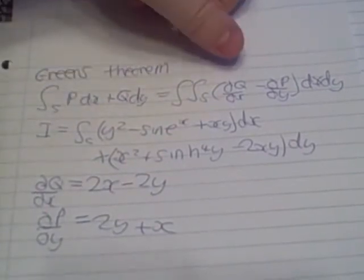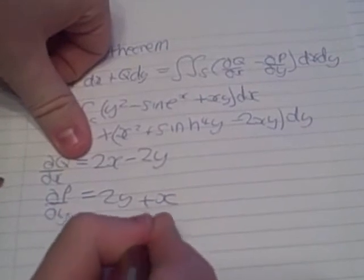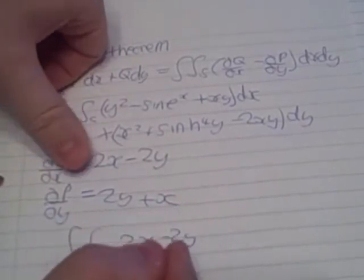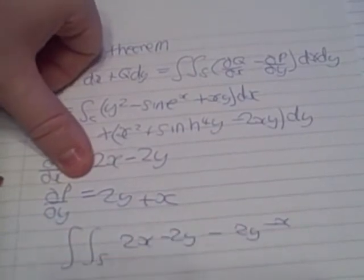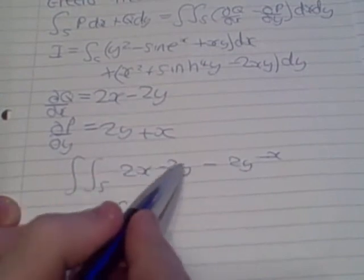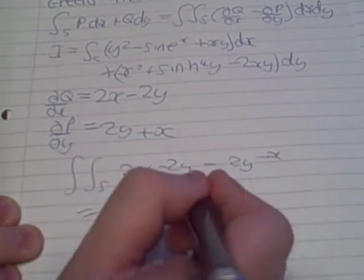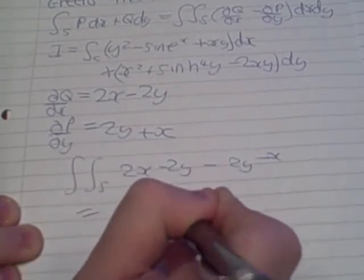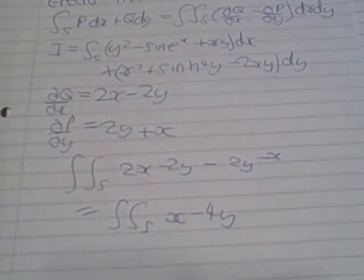So now we just have to do the double integral s of this subtract that, which is 2x minus 2y minus 2y minus x, which equals the double integral of x minus 4y. And from this, it's a simple double integral over whatever your space may be.